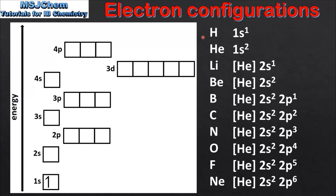Starting with the element with atomic number one, which is hydrogen. Its electron configuration is 1s1, so we put one electron in the 1s sub level. Moving on to helium, which has the electron configuration 1s2, we now put a second electron in the 1s sub level, with one arrow pointing up and one arrow pointing down. This represents the opposite spins of the electrons.